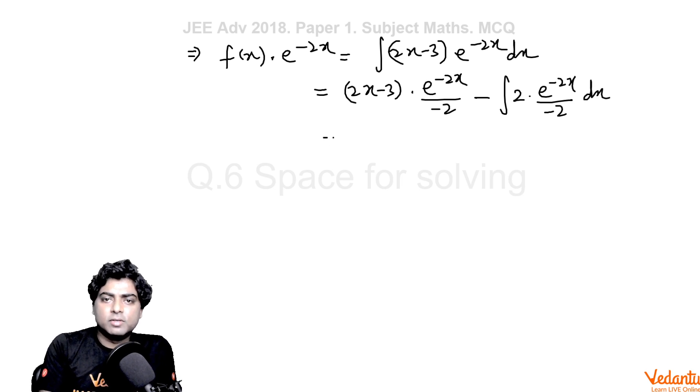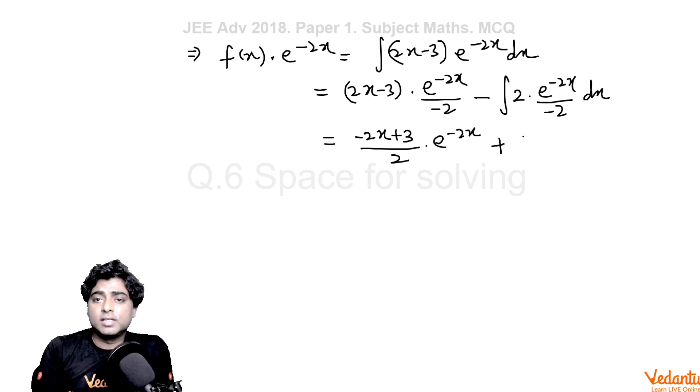Then if we simplify it further, we will get -(2x + 3)/2 times e^(-2x) plus integral of e^(-2x) as e^(-2x) by -2 plus c, the constant of integration.